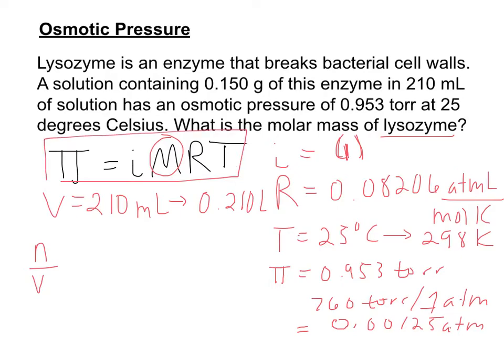Molarity M equals the osmotic pressure divided by R T i. If we take that relationship n over V equals π over R T i, we can rearrange this further to n equals π times V over R T i and solve for n.